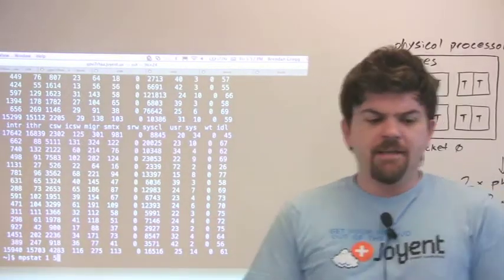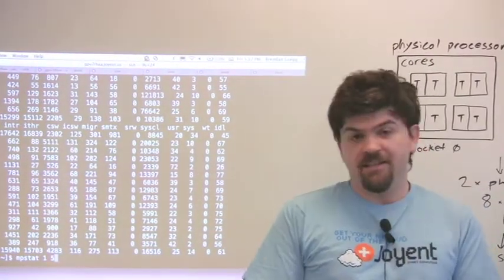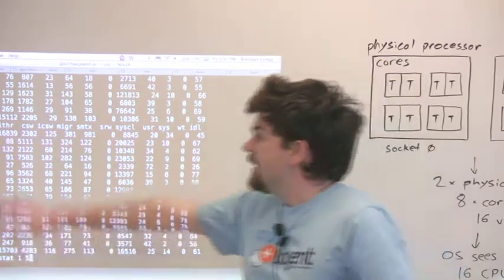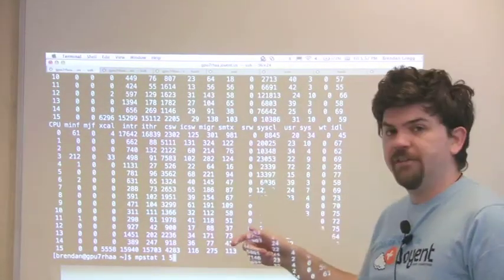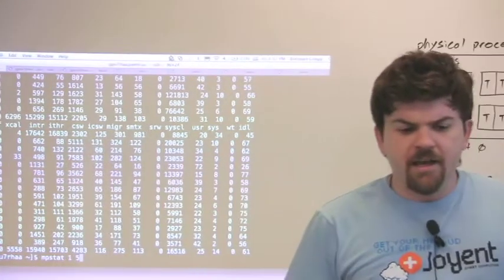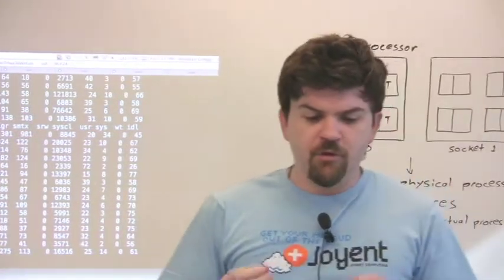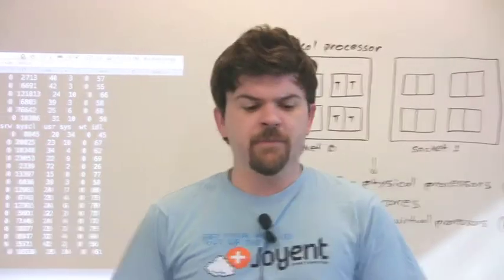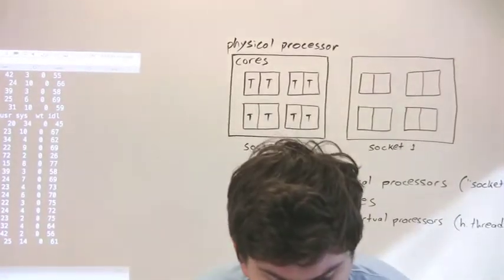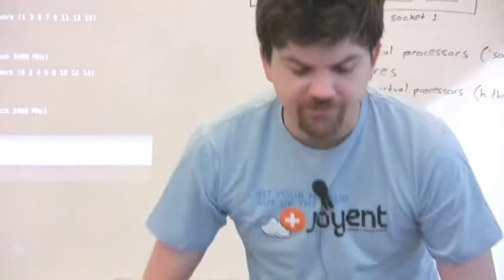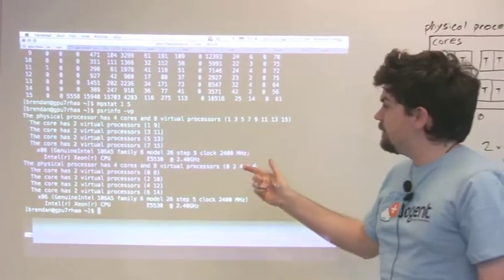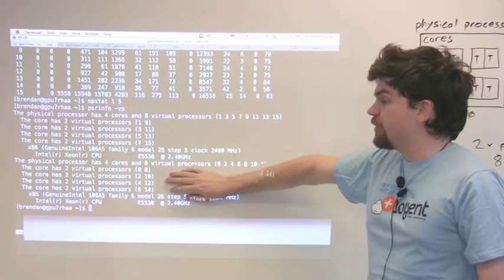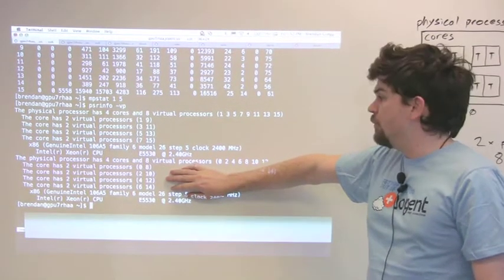So the first thing I want to talk about is, what is a CPU according to this list? Here it's telling me I've got 16 CPUs labeled from 0 to 15. What these are, are the smallest identifiable unit on the system that's a CPU. The system I'm on, I can type PSRinfo -vp. This is an Intel Xeon system. It has two processors, physical processors, or what we call sockets.